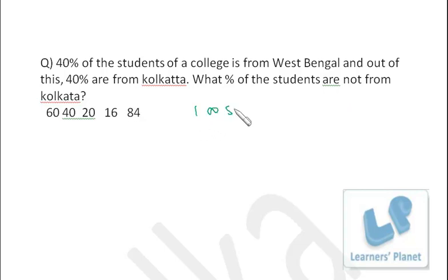Say there are 100 students. From West Bengal, 40 students. And out of these 40 students, 40 percent are from Kolkata, so from Kolkata 40 percent of 40, that is 16 students.